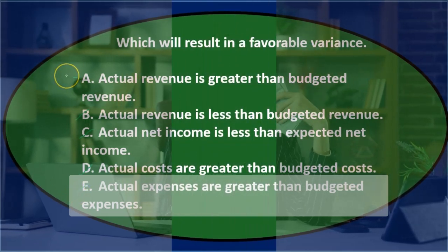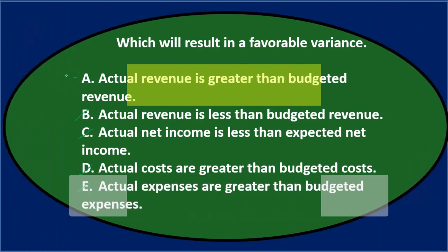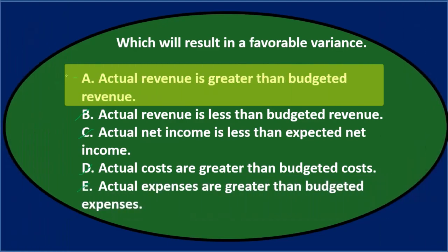Final answer: which will result in a favorable variance? A — actual revenue is greater than budgeted revenue.